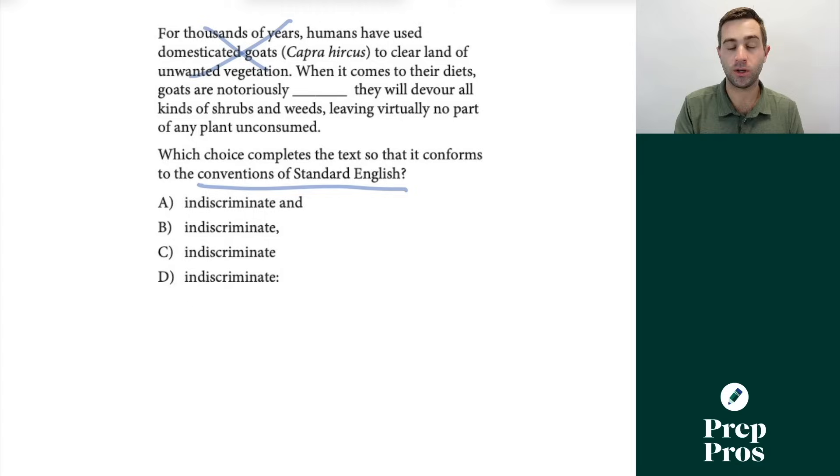Now, since we're dealing with punctuation, we really don't need to read the sentence unless we want context. When it comes to their diets, goats are notoriously indiscriminate. Well, we have a full sentence or independent clause. Now, if we look after this, they will devour all kinds of shrubs and weeds, leaving virtually no part of any plant unconsumed. This gives us another independent clause in full sentence.